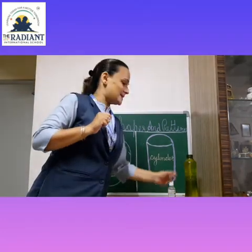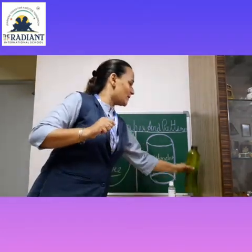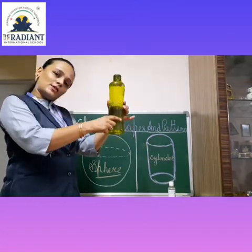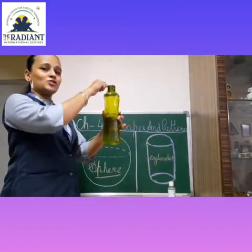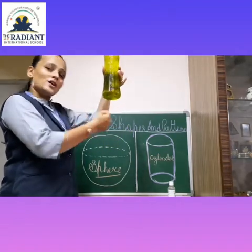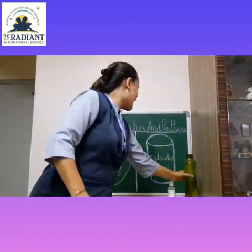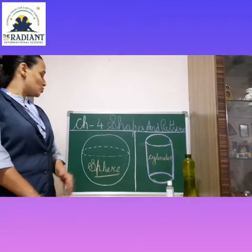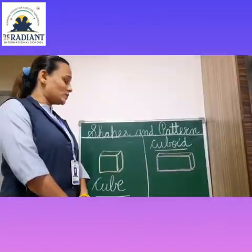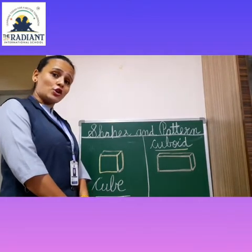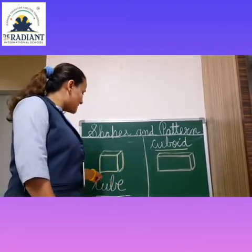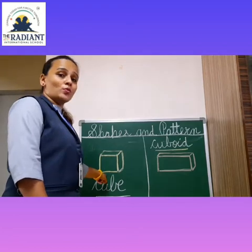Now, one more last example for you. I have a water bottle — this is flat from both sides, the top part is also a curved surface, and even the bottom part is also a curved surface. I think you have understood the solid shapes of the sphere and the cylinder. We are going to learn the third shape. That is called a cube. Can you see on the blackboard which shape is drawn?